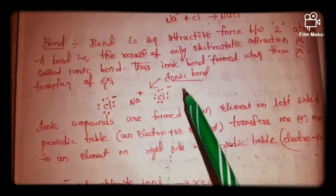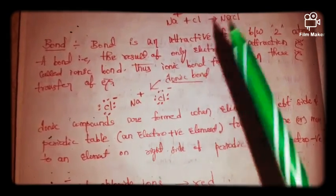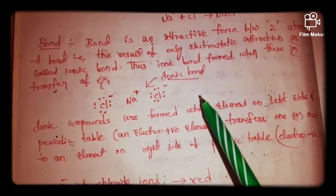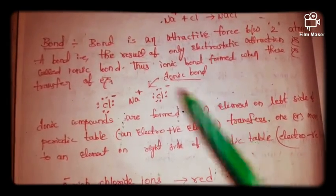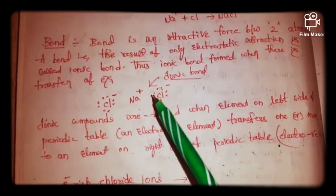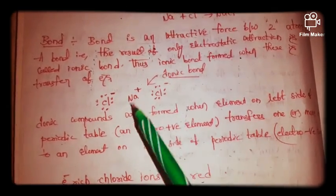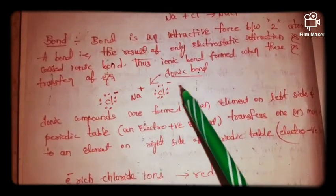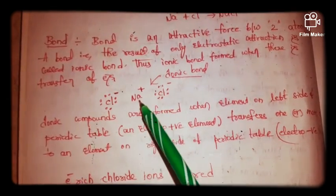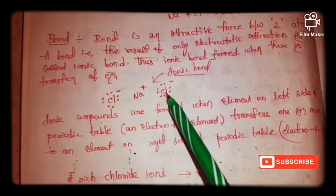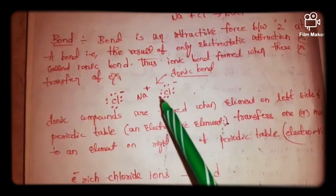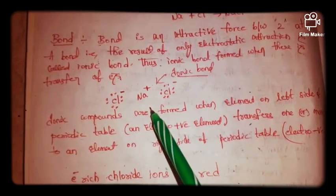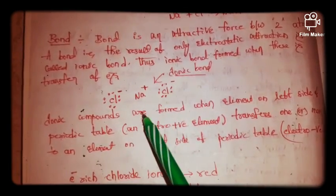For example, in NaCl, the bond present between Na and Cl is formed due to the attractive force between them. Attractive forces exist between Na and Cl because opposite charges are present on these atoms — sodium has a positive charge and chlorine has a negative charge. That means electrostatic attraction is present, and as a result an ionic bond is formed.